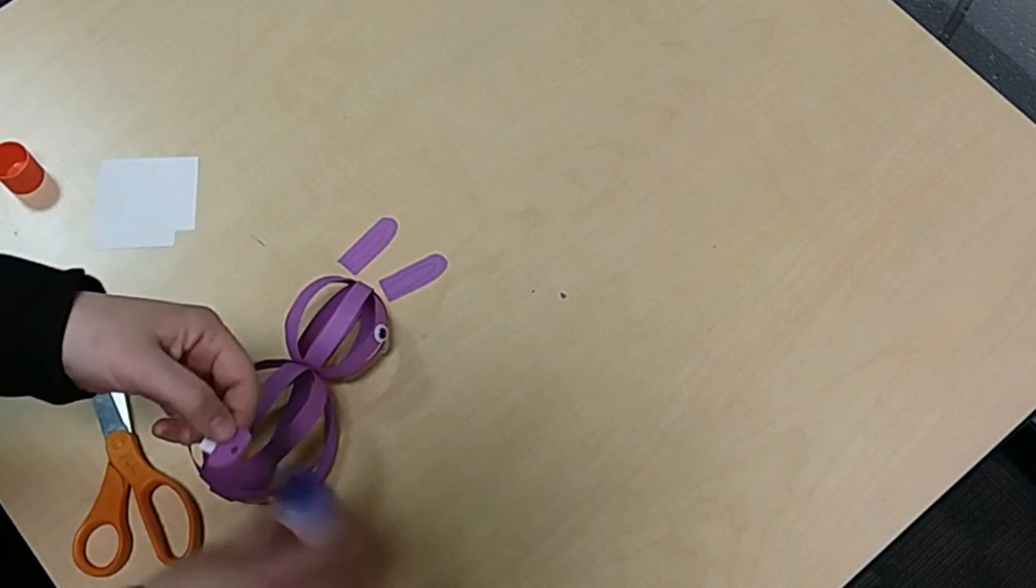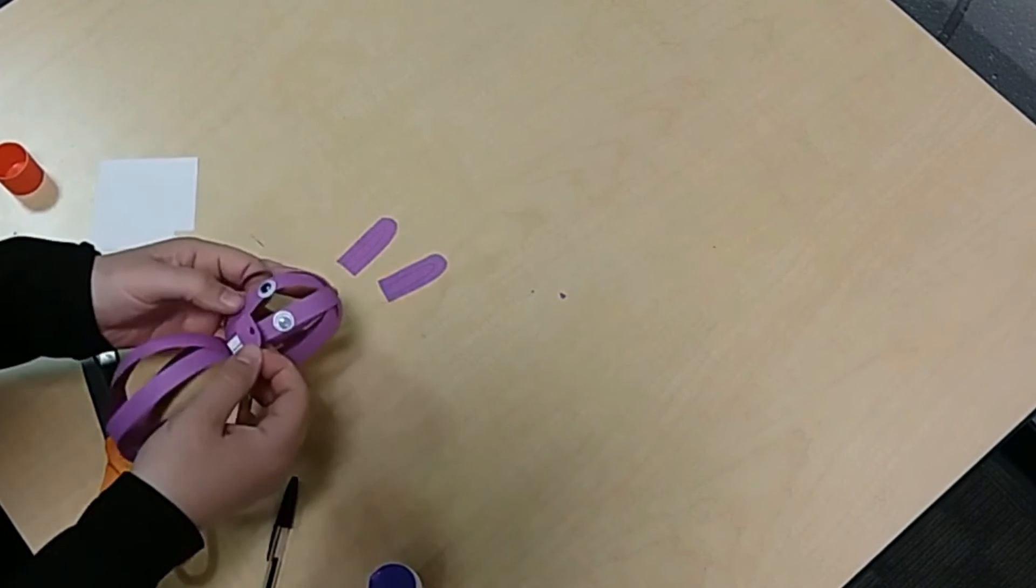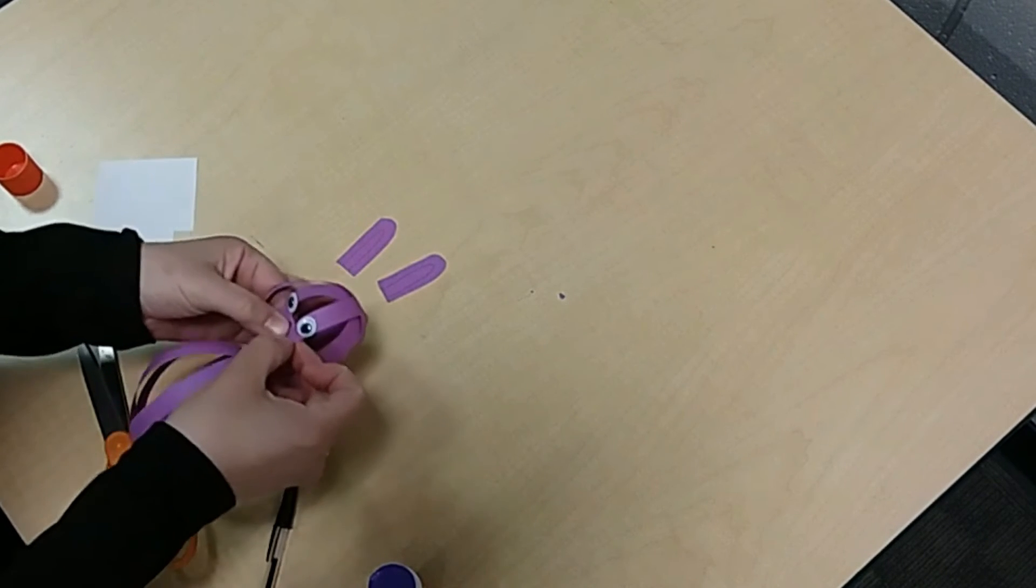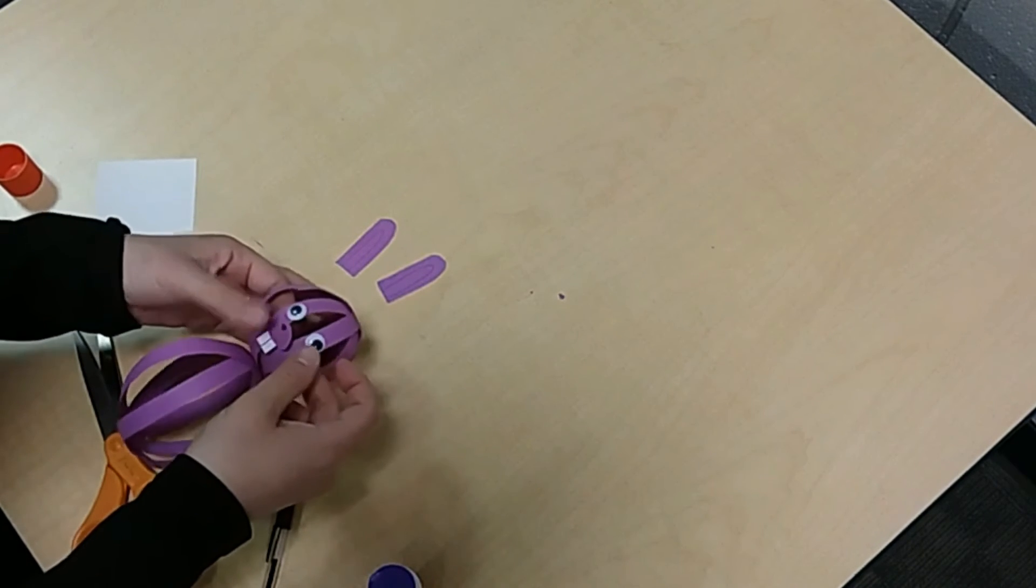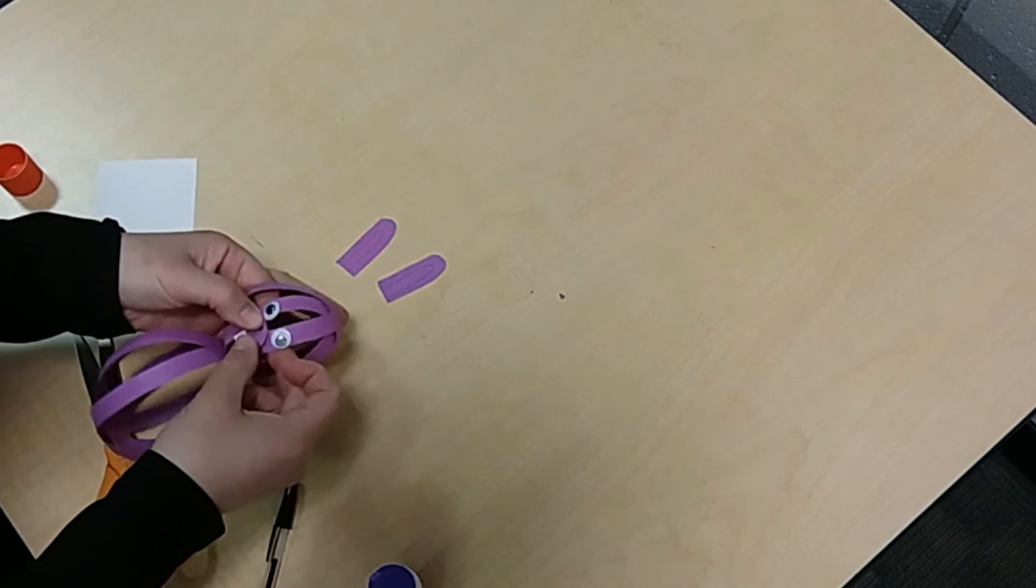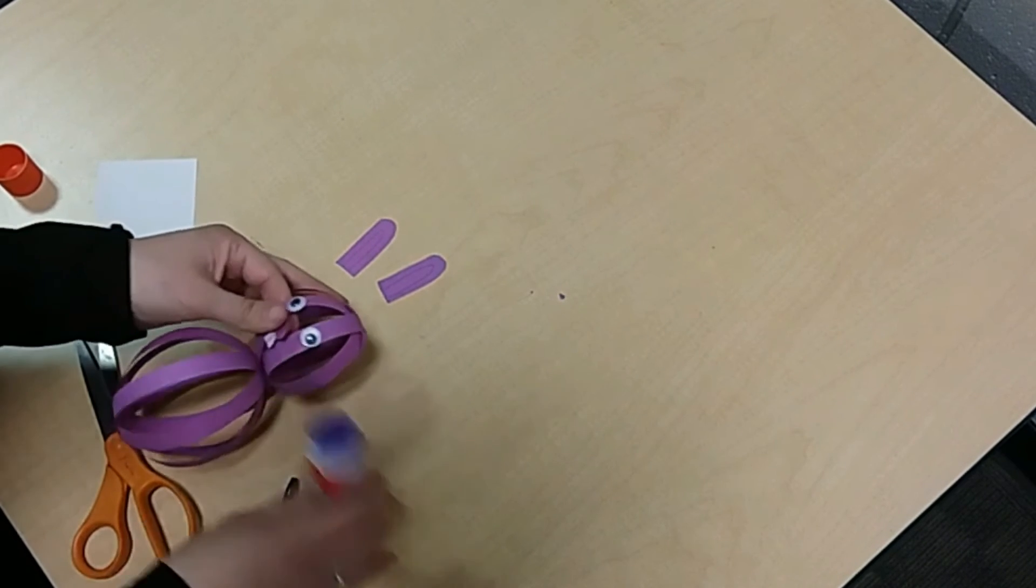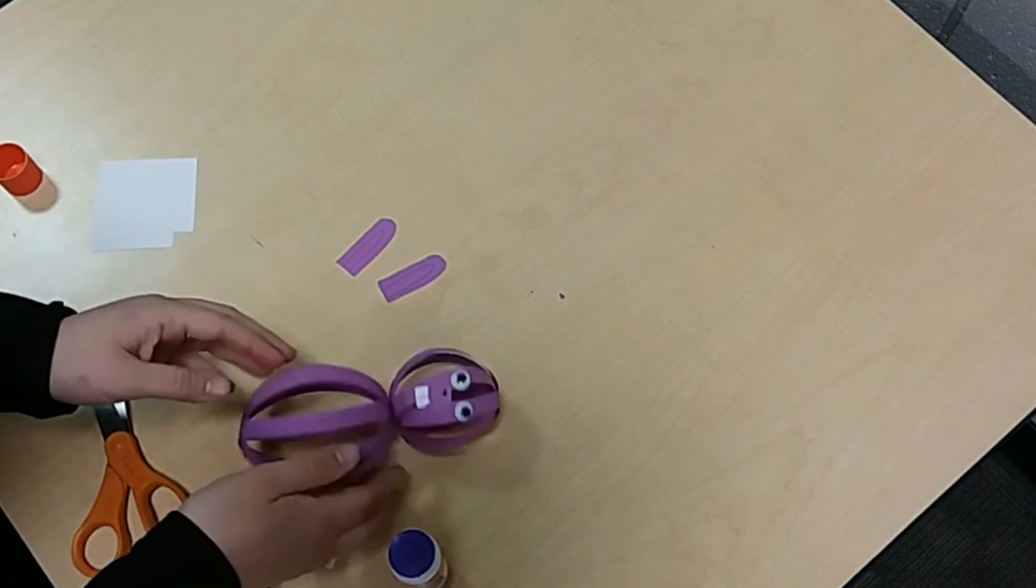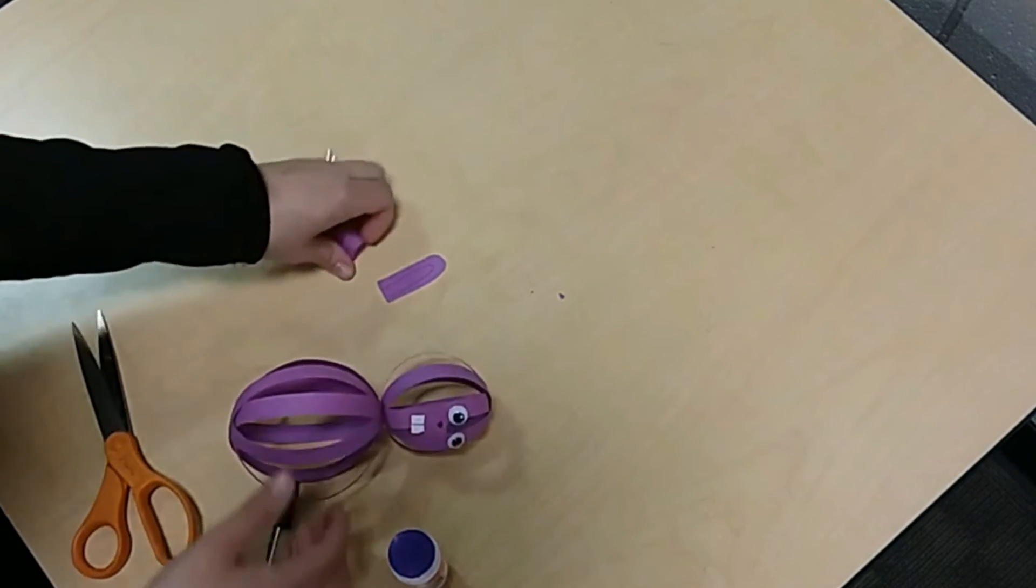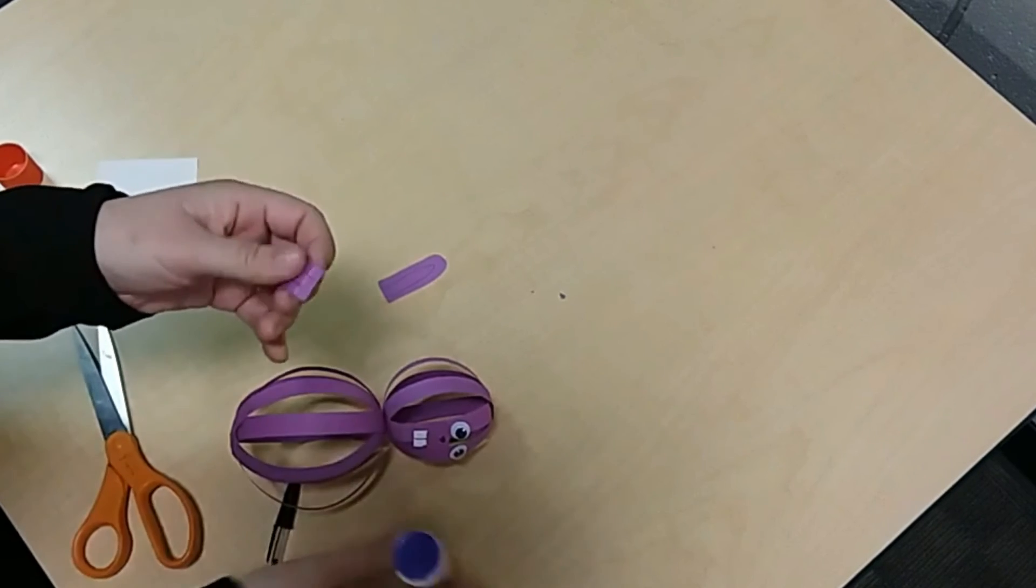Then I'm going to take my nose, glue it, and put that right here. Press down. Make sure you have enough glue on the back so it holds onto two pieces of paper. Then I'm going to fold the bottom part of my ears back a little bit, like that part.